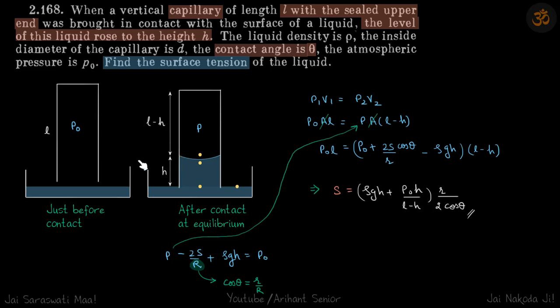Just before the gas is trapped, the pressure inside the capillary is p0. When the pressure starts to rise, considering an isothermal process, we can use p1 v1 equals p2 v2. So let's solve this problem now. First equation: to find h in terms of p.